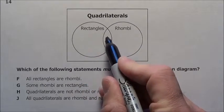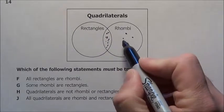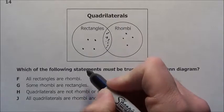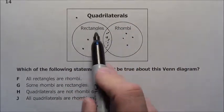That's what's going to be in this intersection, all these little guys right here. There are some guys that are right here that are just rhombi and there are some that are here that are just rectangles. And there are some guys out here that are quadrilaterals but they are neither one of these.